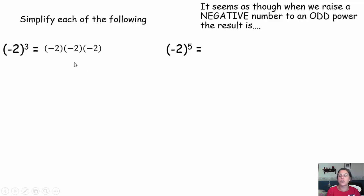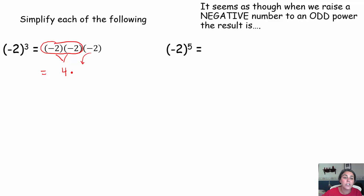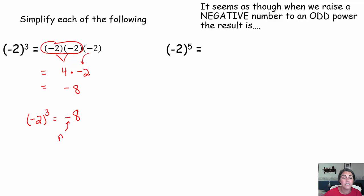All right. Negative 2 to the third power simply means negative 2 times negative 2 times negative 2. What I like to do is pair up my factors. Negative 2 times negative 2 — a negative times a negative is a positive 4. Times, I still have this extra negative 2 trailing along. And 4 times negative 2 — a positive times a negative is a negative — 4 times 2 is 8. So a base of negative 2 raised to the third power actually gives us a negative result, negative 8.